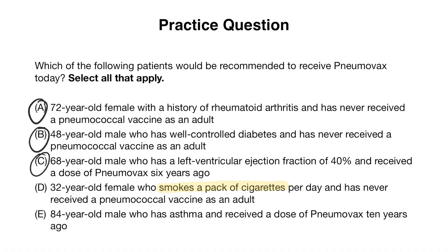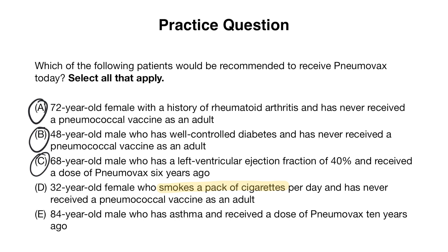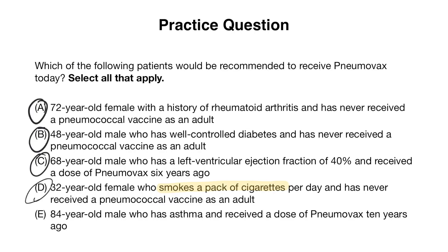Answer choice D: a 32-year-old female who smokes a pack of cigarettes per day and has never received a pneumococcal vaccine as an adult. Per the previous recommendations, cigarette smokers are considered to have a chronic medical condition, so this patient would be eligible for Pneumovax. Answer choice E: an 84-year-old male with asthma who received Pneumovax 10 years ago — so he would have been 74 at that time. Because he was above 65 when he received his dose, he is not eligible for a second dose, as only one dose of Pneumovax is needed at 65 and up.